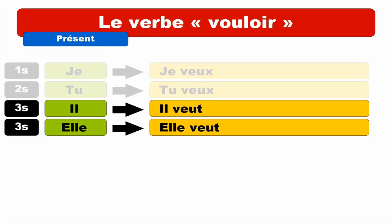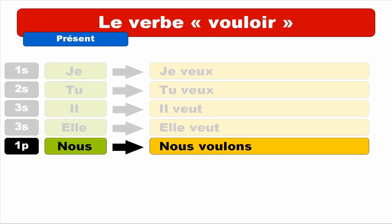So JE, TU, IL and ELLE are pronounced the same way — the sound is VEUX. But keep in mind for JE and TU you put X at the end, and for IL and ELLE you put T at the end. Now for NOUS — first person of the plural — it's NOUS VOULONS. Final S is not pronounced. NOUS VOULONS. Repeat. Second person — VOUS VOULEZ. Repeat. VOUS VOULEZ.